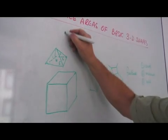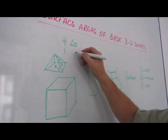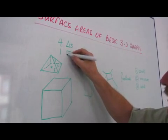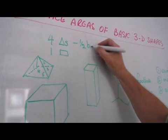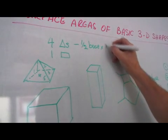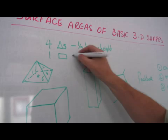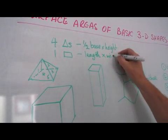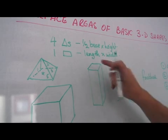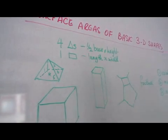Here we have four triangles and one rectangle. The triangles, we use the formula half the base times the height, the perpendicular height. And the rectangle, length times width. So then we can work out the surface area by working out the individual areas, adding them together.